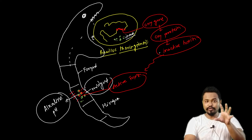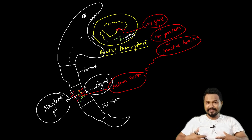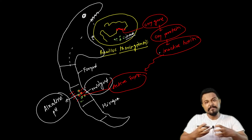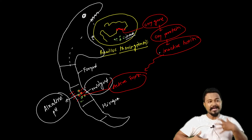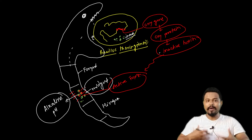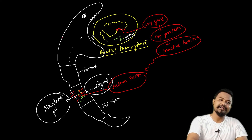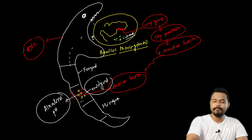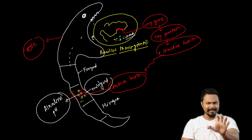This active toxin creates leakage in the alimentary canal of the insect. Due to this leakage, the pest will die. This is how the mechanism works — it is quite complex.